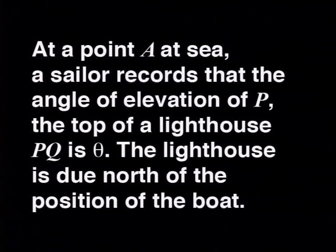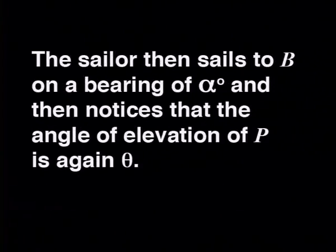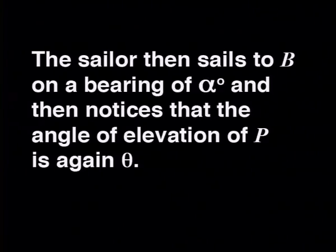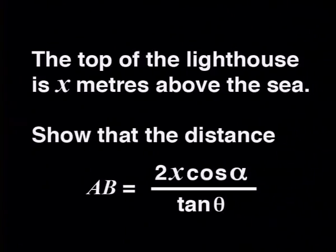At a point A, a sailor records that the angle of elevation of P, the top of lighthouse PQ, is theta. The lighthouse is due north of the position of the boat. The sailor then sails to B on a bearing of alpha degrees and notices that the angle of elevation of P is again theta. The top of the lighthouse is x meters above the sea. Show that the distance AB equals 2x cos alpha divided by tan theta. This looks complicated, but it's not that bad once you get to grips with it.